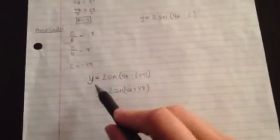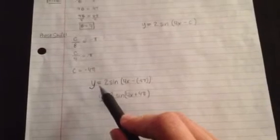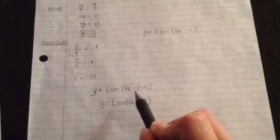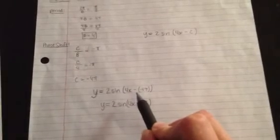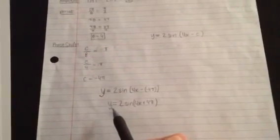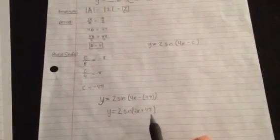So just plug that value in for C right here into this little function. Y is equal to 2 sine of 4x minus negative 4 pi. And when you subtract by a negative, that's really just like adding. So your final answer is Y is equal to 2 sine 4x plus 4 pi.